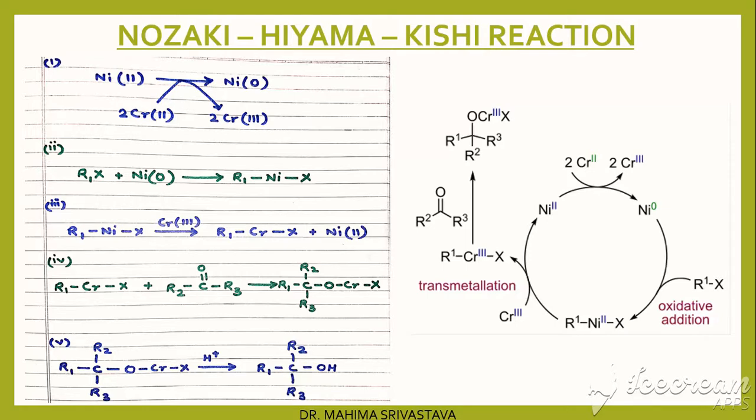As far as our first application is considered, it is Nozaki-Hiyama-Kishi reaction. In this NHK reaction, chromium chloride adds to unsaturated halides to form organochromium compounds where chromium is in oxidation state 3.